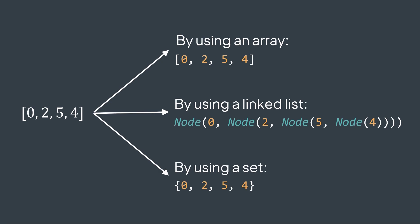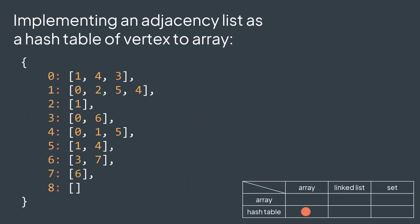Now for the choice of the second dimension, there isn't much difference between the three choices. We can choose the set if we want fast edge deletion and checking adjacency. Otherwise, we can just use an array, it uses less space than a set. Our final decision is that to implement an adjacency list, we will generally use a hash table of vertex to array, a hash table where the key is the ID of the vertex, and the value is an array that contains its neighbors.